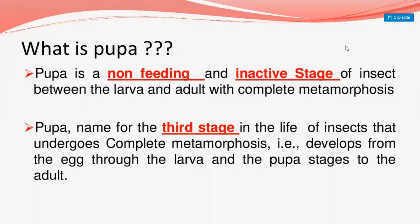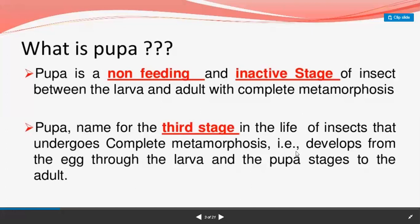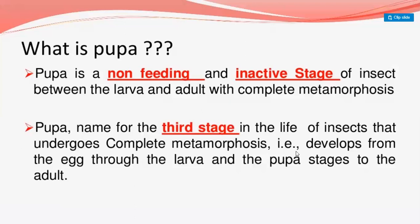Good afternoon students. Today our lecture is on what is pupa. Pupa is a non-feeding and inactive stage of insect between the larva and adult, with complete metamorphosis. Pupa is part of complete metamorphosis. First, an insect lays an egg, and then the life cycle starts: egg, larva, pupa, and adult. Pupa is the third stage of the life cycle in insects that undergo complete metamorphosis.